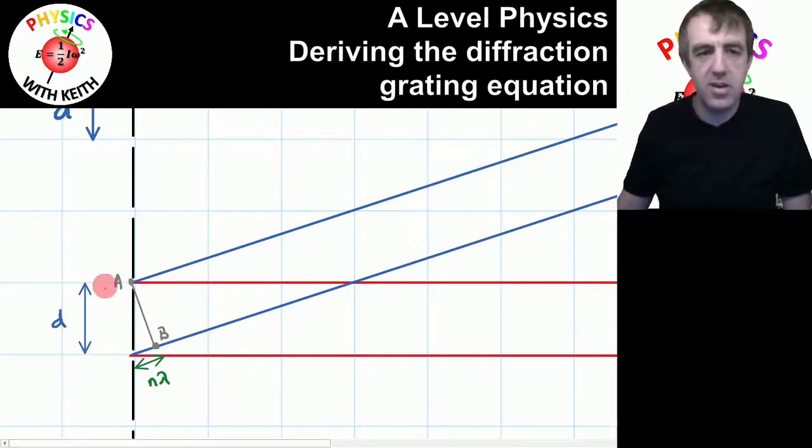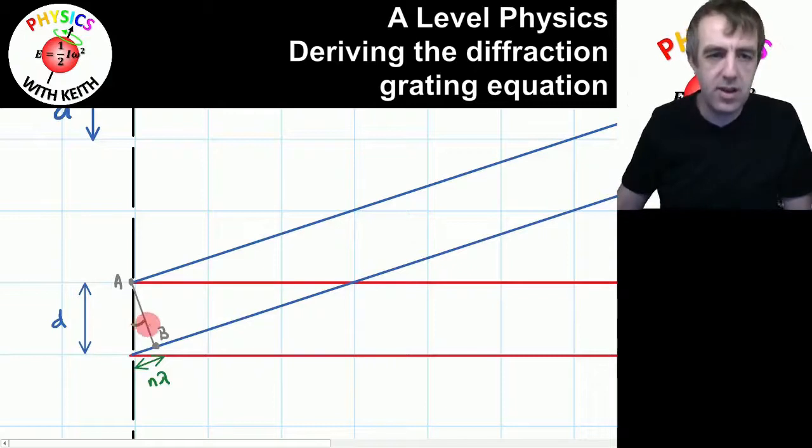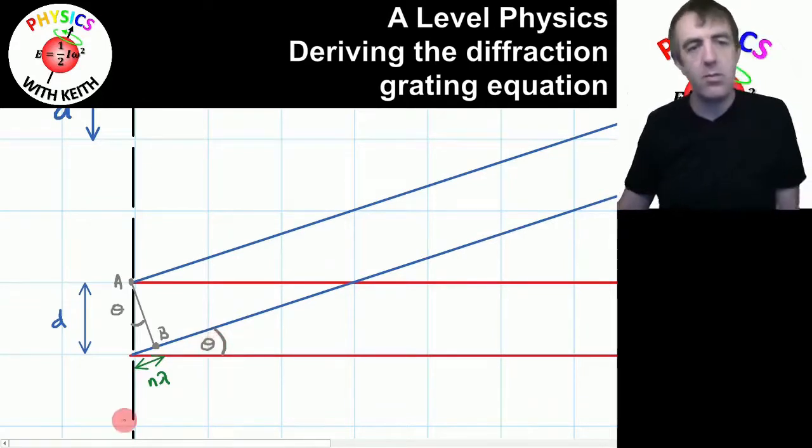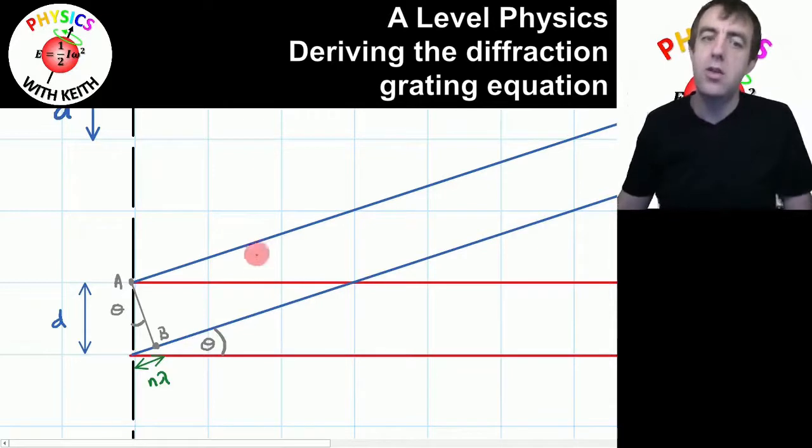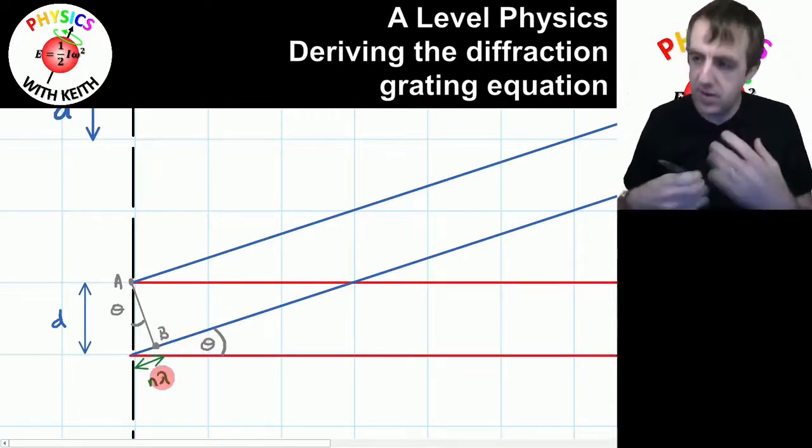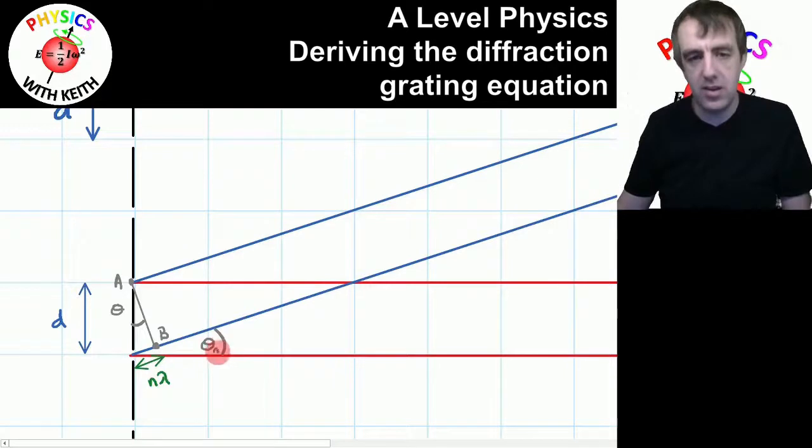This was our diagram, d was the distance between slits, n lambda is the path difference. This angle here is equal to this angle here. And we can call that theta. And that is the angle to the order. So the theta for the first order, the theta for the second order, and so on, we could put a subscript n on here to say it's the angle to the nth order.